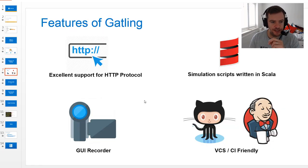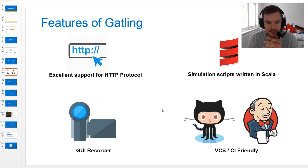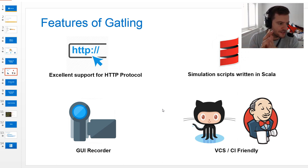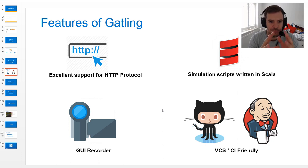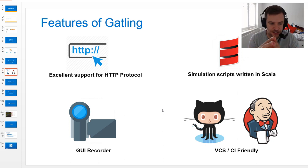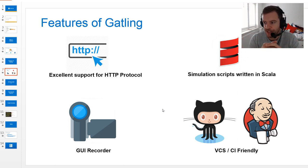Gatling comes with excellent support for the HTTP protocol. Gatling can be expanded to use other protocols like JMS, but most likely you'll want to use HTTP — it's great for testing web applications or calling APIs directly. The simulation scripts you write for Gatling are written in Scala. If you don't have much Scala experience it's not the end of the world, because Gatling comes with a very expressive DSL which makes tests quite readable and easy to understand.